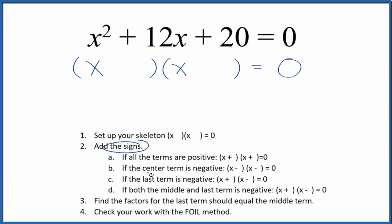Then we can add signs to our skeleton equation. In this case, we have a positive and a positive. So if all the terms are positive, we'll put a positive and a positive in our skeleton equation, like this.